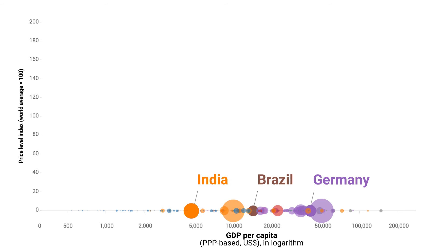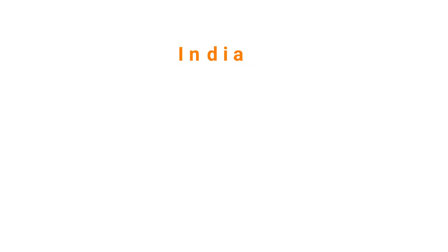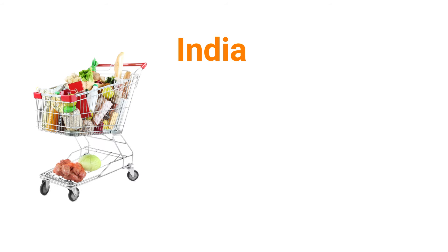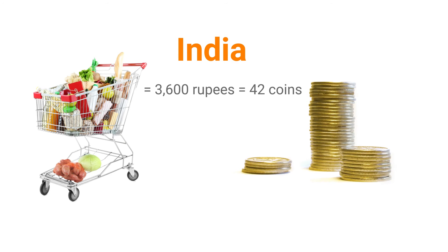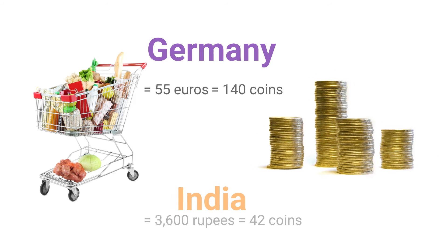The vertical axis shows price level. Let's examine what it means. Suppose you can buy this basket of goods with 100 coins in your country. If you travel to India, a basket of the same quantity and quality of goods would cost about 3,600 rupees, which can be exchanged using the market exchange rate into 42 coins of your local currency. If you go to Germany, the same basket would cost about 55 euros, or 140 of your coins, again using the market exchange rate. Hence, the same basket of goods is more expensive in Germany and less expensive in India, relative to your country.